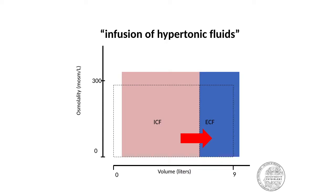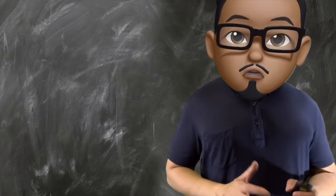Water will flow from your ICF to the ECF, leading to a decrease in volume of your ICF, but an increase in osmolarity. What will happen to the cells? They will shrink or shrivel up.